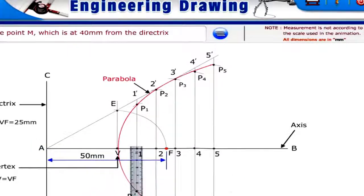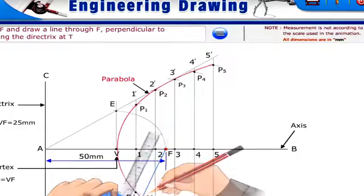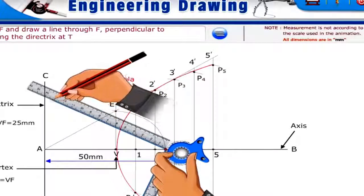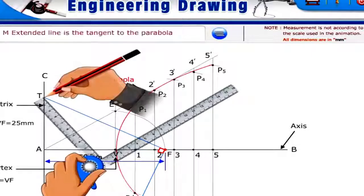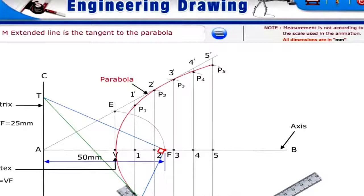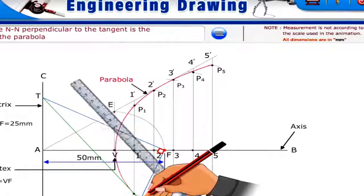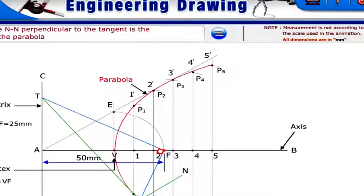To draw the tangent and normal to the parabola, locate point M which is 40 mm from the directrix. Join M to F and draw a line through F perpendicular to MF, meeting the directrix at T. The line joining T and M extended is the tangent to the parabola. Draw a line NN' perpendicular to the tangent, which is the normal to the parabola.